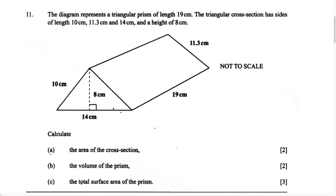In this video, we're going to learn how to find the area, the volume, and the total surface area of a triangular prism. The question reads: the diagram represents a triangular prism of length 19 cm. The triangular cross section has sides of length 10 cm, 11.3 cm, and 14 cm, and a height of 8 cm.